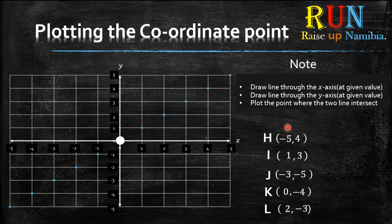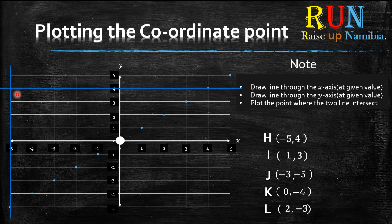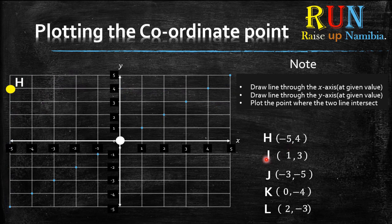For H, we need to check what value is given on the x-axis. For H, the x value is negative 5. Go on the x-axis, find negative 5 — it's over here — and draw a line. Then go to the y-axis: the y value is 4. Look for positive 4 on the y-axis and draw another long line. Where the two lines intersect, that's where your point will be. Plot H there.